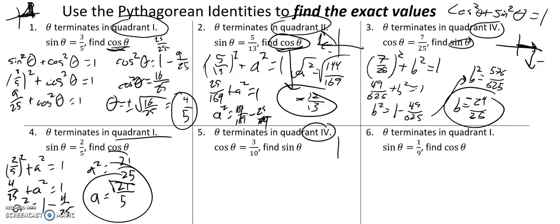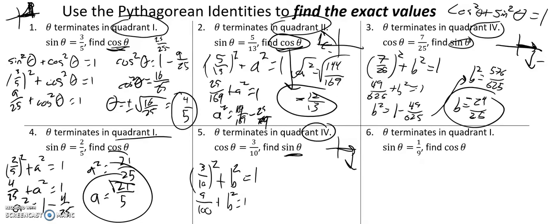Quadrant four — cosine is positive, sine is negative. Cosine squared plus sine squared — I'll call it b — equals one. If I square three-tenths, it's nine one-hundredths. Subtract nine one-hundredths from both sides. One is one-hundred over one-hundred, so a hundred minus nine is ninety-one. B squared equals ninety-one over one-hundred. Square root of ninety-one over square root of one-hundred, which is ten. Since it's in quadrant four, sine must be negative.